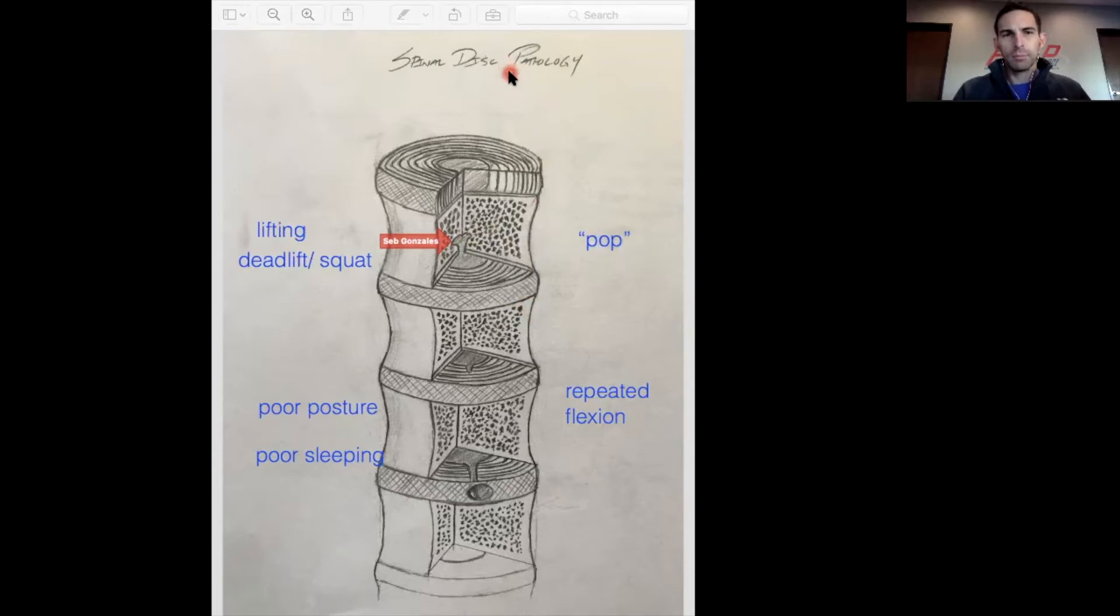I guess I should go back into this one. We have poor posture, we have poor sleeping, and repeated flexion on these types right here in the middle. And then we have the other types, which is going to be this one.